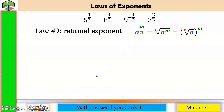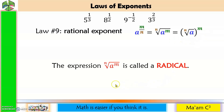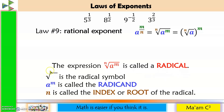So here is Law Number 9: Rational Exponent. I already discussed laws one through eight in my previous lesson, Exponents Part 1. The rational exponent states that a raised to m over n is equal to the nth root of a raised to m, or the quantity nth root of a raised to m. The expression nth root of a raised to m is called the radical. This is the radical symbol. The expression a raised to m inside the radical symbol is called the radicand, while n is the index or root of the radical.